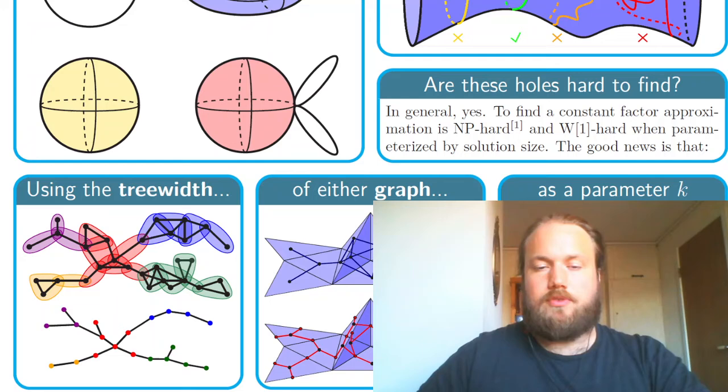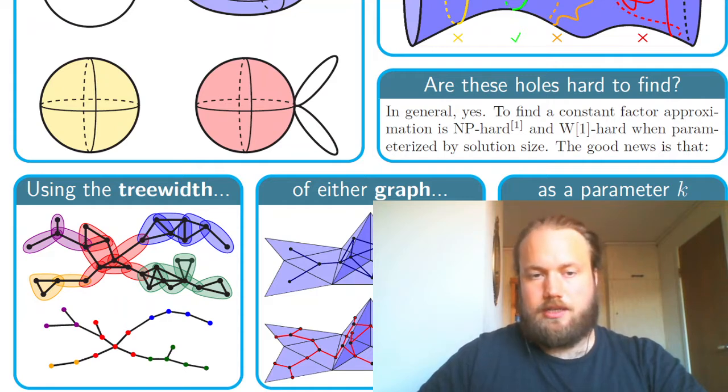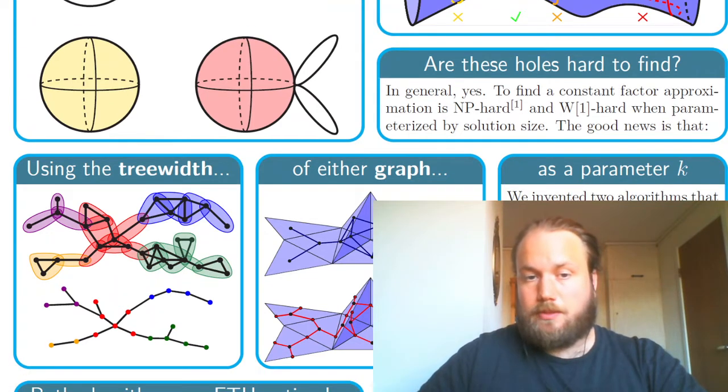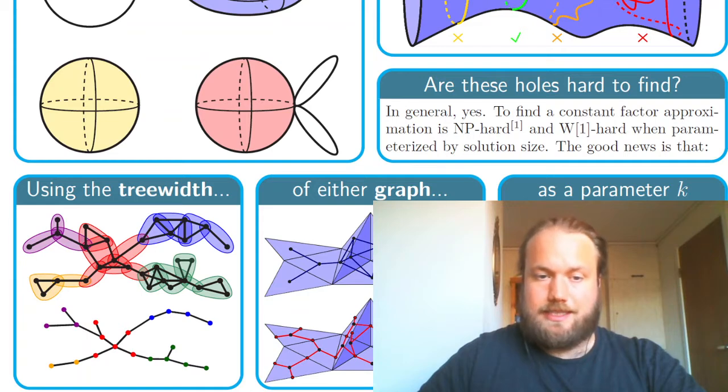Tree width is one of the big hammers in parameterized complexity theory. It is a notion that captures how close a graph is to being a tree. The actual definition of tree width is rather technical so we skip it but the picture to the left should give you at least some idea about what tree width is.